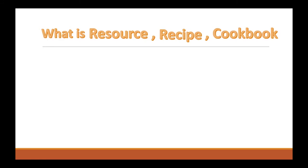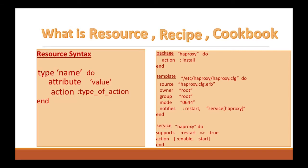Now, let's take an example. In this example, we have declared three resources: a package, a template, and a service. On the left-hand side, this is the resource syntax. Every resource in chef is a Ruby block having four different components: a type, a name, one or more properties or attributes, and one or more actions.